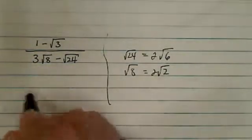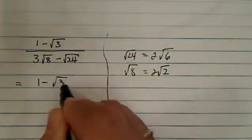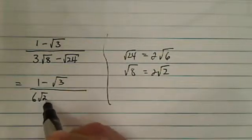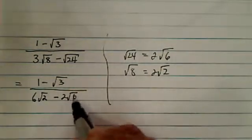Now let's put it in there. So this one is equal to 1 minus radical 3, and 3 times 2 is 6. So I have 6 radical 2 minus 2 radical 6.